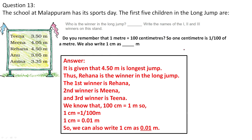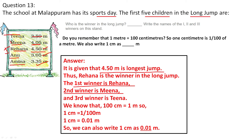The school Malapuram has its sports day. The first 5 children in the long jump are: Tina jumped 3.50 metres, Mina 4.05 metres, Rahana 4.50 metres, Anu 3.05 metres, and Amina 3.35 metres. The winner is Rahana with 4.50 metres — the longest jump. Second winner is Mina with 4.05 metres. Third winner is Tina with 3.50 metres.